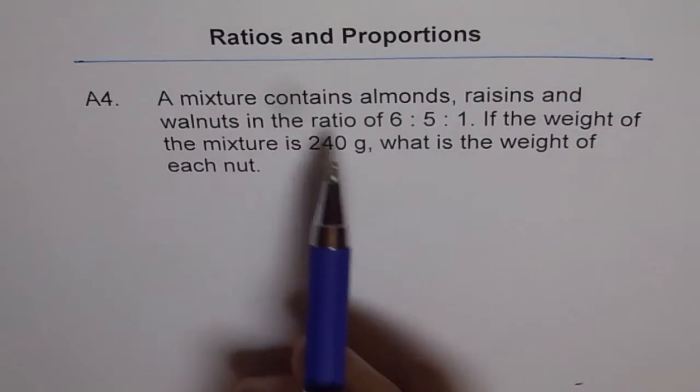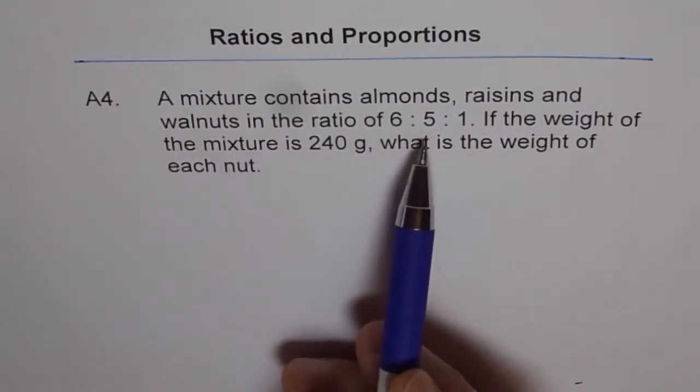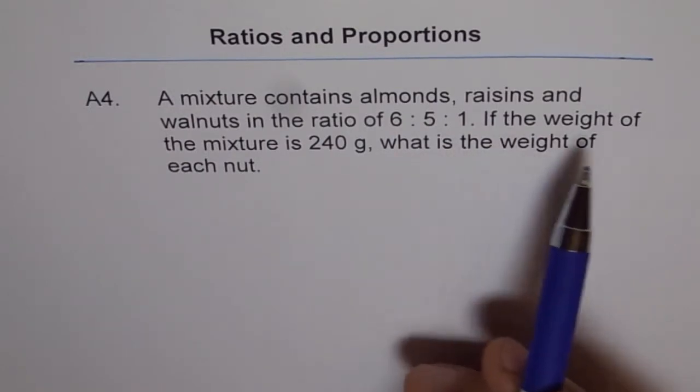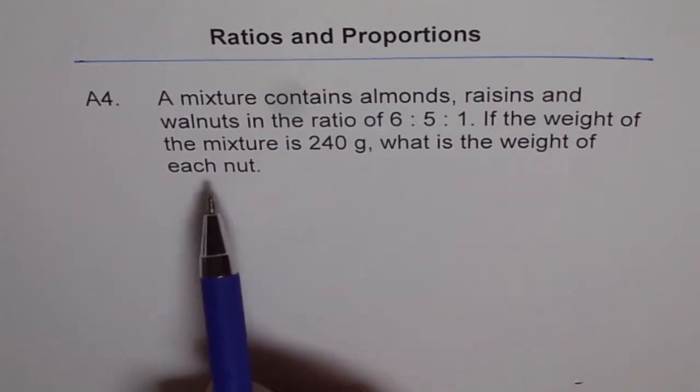A mixture contains almonds, raisins and walnuts in the ratio of 6 is to 5 is to 1. If the weight of the mixture is 240 grams, what is the weight of each nut?